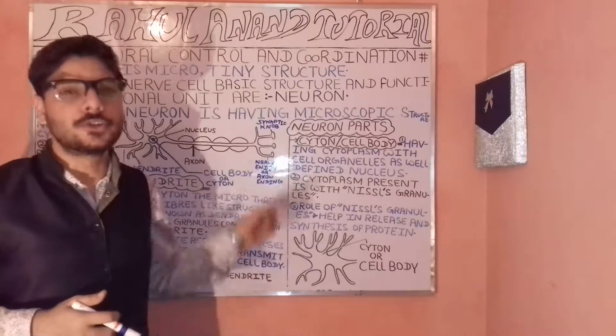After the axon endings we have the synaptic knob. From each of the axons there are bulb-like structures arising, and these are known as the synaptic knob. The synaptic knob contains synaptic vesicles with neurotransmitters. The neurotransmitter plays a very important role in transmitting nerve signals.